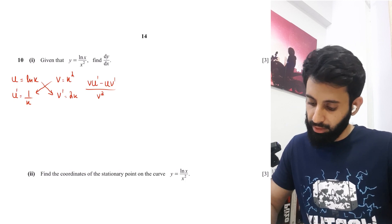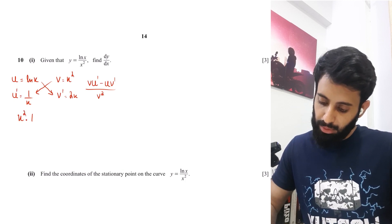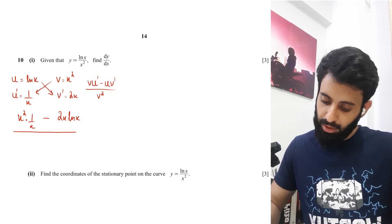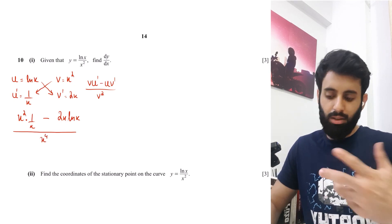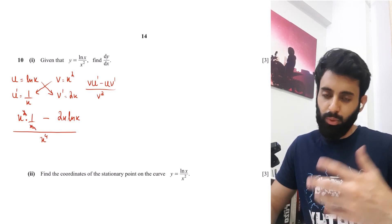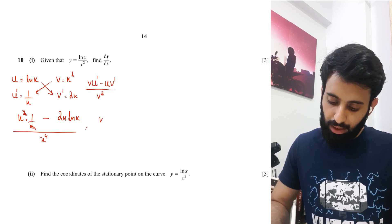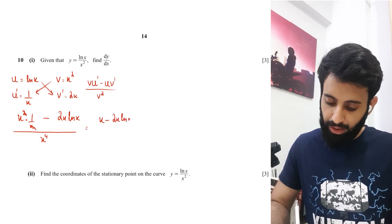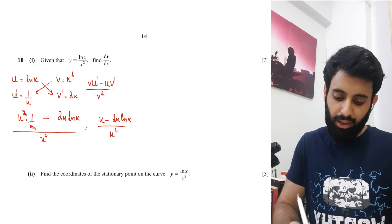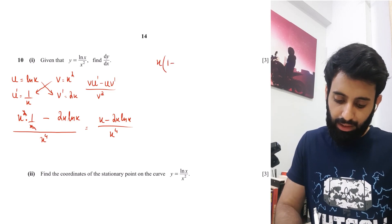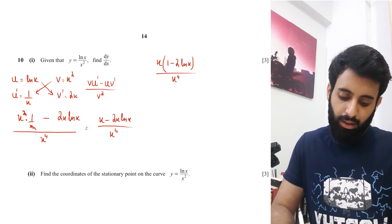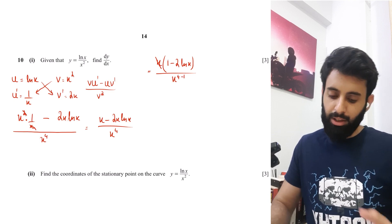Applying quotient rule: v·u' = x^2 times (1/x), and u·v' = 2x times ln(x), all over v^2 = x^4 (since x^2 squared is x^4). Simplifying: x^2 times (1/x) = x, so we have (x minus 2x·lnx) / x^4.